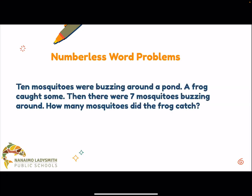The last part is adding at the end: how many mosquitoes did the frog catch? This might be the piece we would normally start with — the whole question: 10 mosquitoes were buzzing around a pond, a frog caught some, there were seven mosquitoes buzzing around, how many did the frog catch? This is a routine we want to help students use to develop contextual understanding, to not be overwhelmed by text, and to be able to pull information from what they're reading.